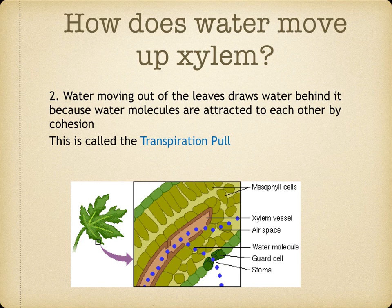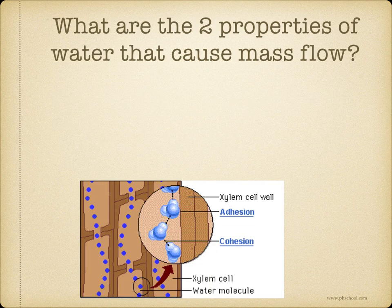As water is being used up or lost from the leaves, more is sucked up from the xylem vessels. It's kind of like water being sucked up through a straw.